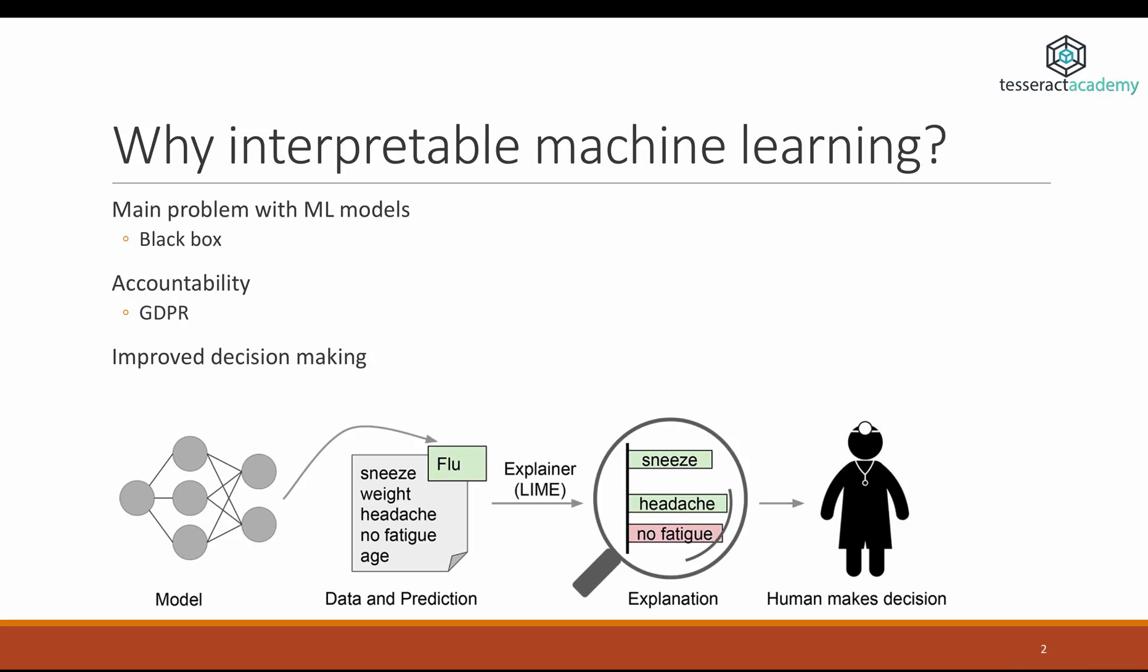Interpretable machine learning is a very exciting topic. Machine learning models traditionally have been black boxes. They deliver results, but we can't really explain how they do what they do. Interpretable machine learning is a niche within machine learning that tries to understand the black box. It tries to understand how these models reach their decisions.